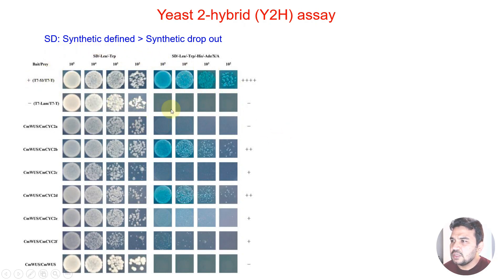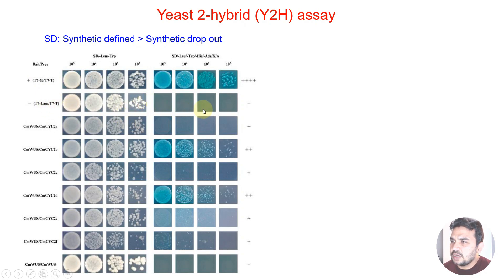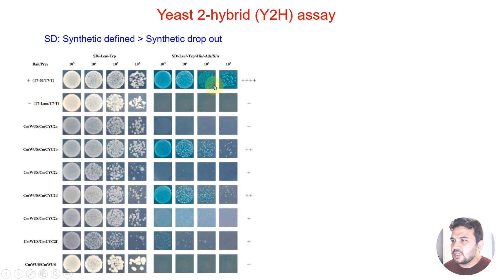Here you can see T7-Lam and T7. The protein on one side is the same, but the other protein has been changed. You can see there are no colonies, which means these two proteins are not interacting. The key rule is: if colonies grow in the selective medium, those proteins are interacting.